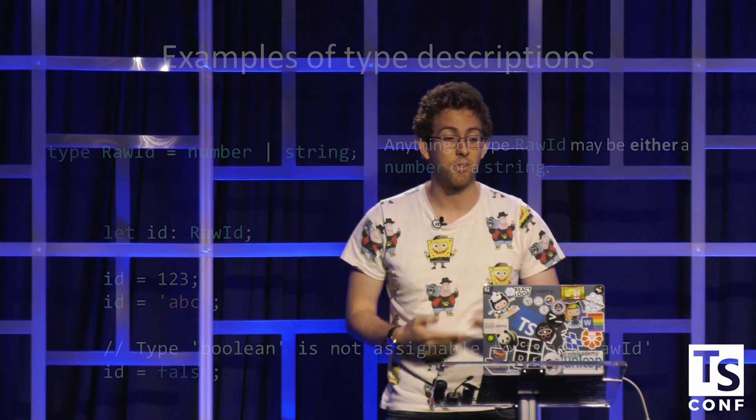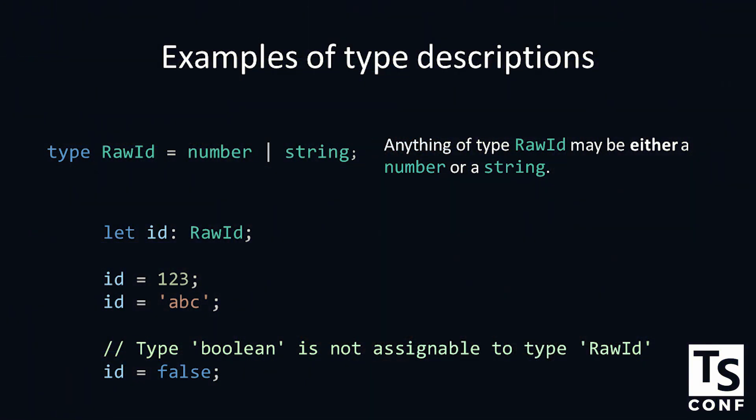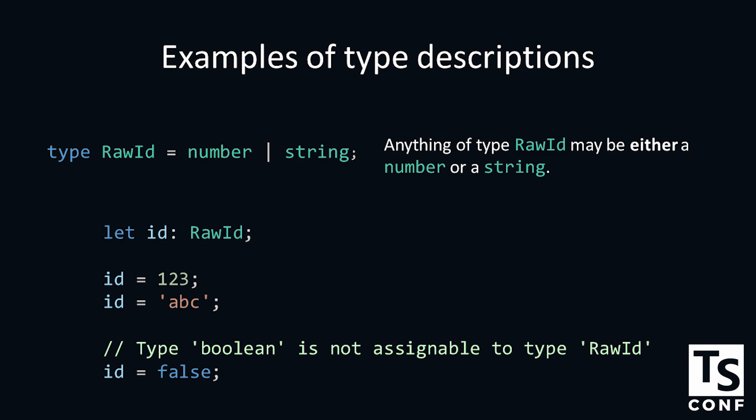Later on, you might also use a different thing called a union type. A union type is an either type. It says I could be this thing or I could be that other thing, potentially other things. Anything of type raw ID we are declaring here must be of type number or string. You might declare a variable ID. The ID can be 1, 2, 3 — that's a number, that's fine. It could be ABC, that's a string. But if you declare a Boolean value on it, that's not allowed. And although this is perfectly valid JavaScript, it's not allowed in the type system. The type checker has declared that your JavaScript doesn't match up with your TypeScript types.